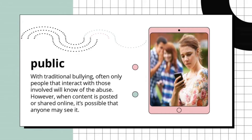Number three: public. With traditional bullying, often only people who interact with those involved will know of the abuse. However, when content is posted or shared online, it's possible that anyone may see it, opening up the victim to more potential ridicule or pain from strangers. This is compounded by the anonymity afforded by virtual spaces — while bullying in person may be done covertly to avoid punishment, cyber bullies need not fear being witnessed if their identities are not known.